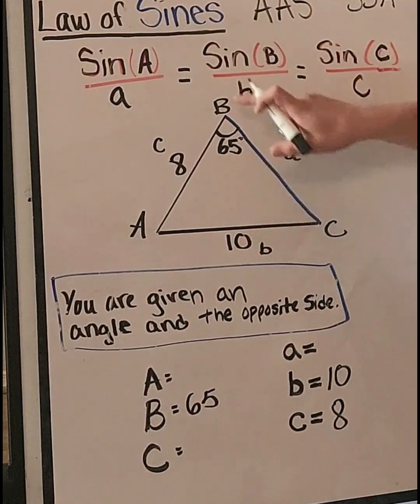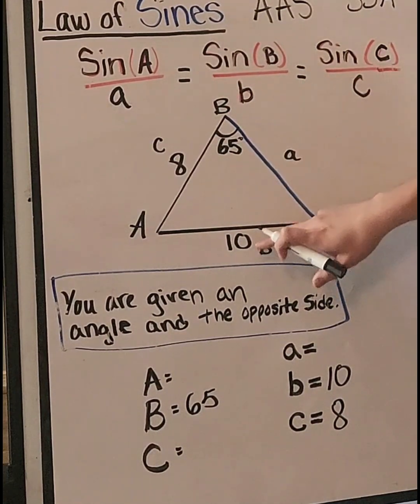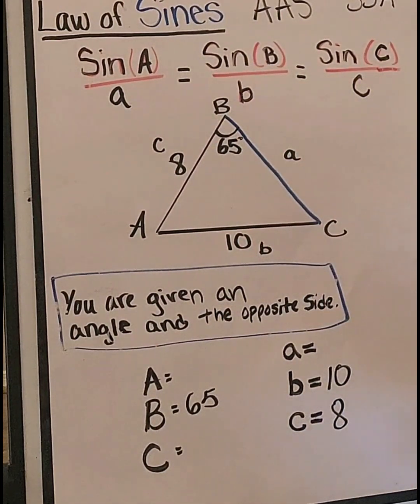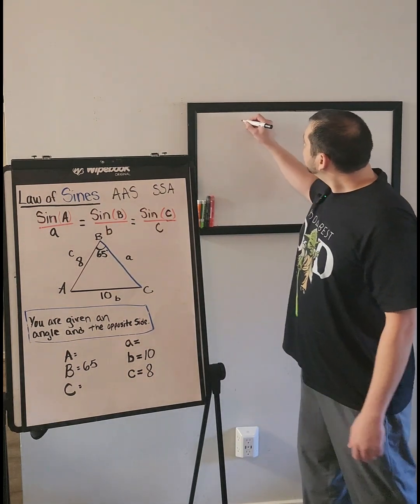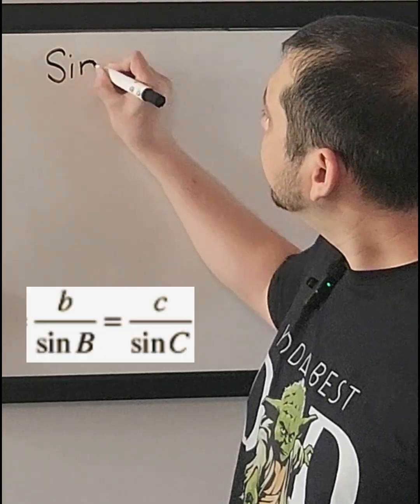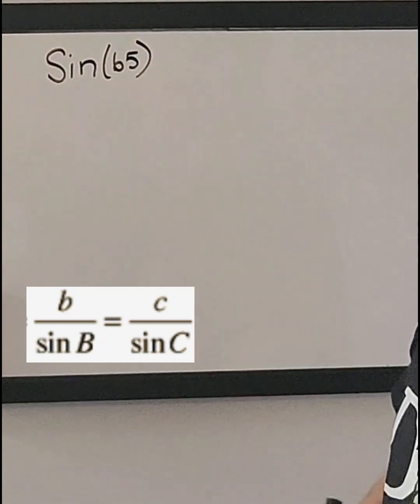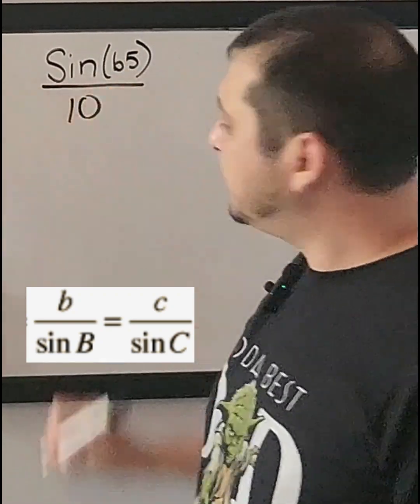I'm going to use this B value since it's the angle B. So it'll be the sine of B over the length of side B, which is opposite angle B. It's going to be the sine of B, which we know is 65 degrees, so make sure your calculator is in degree mode, over 10, which is the length of side B.